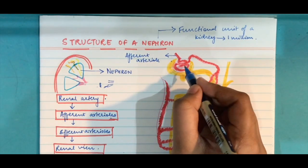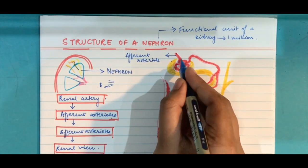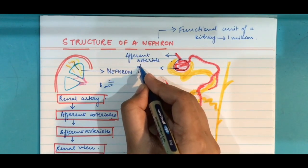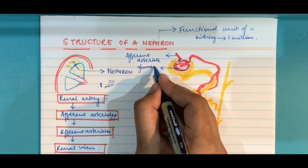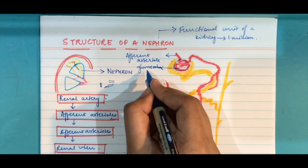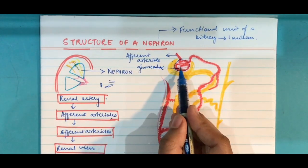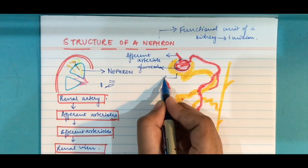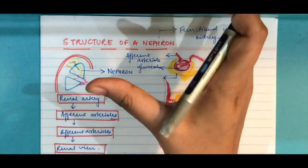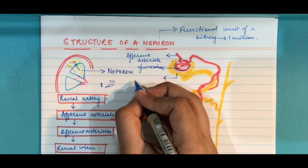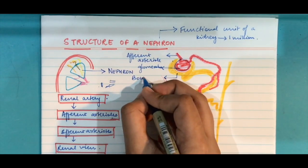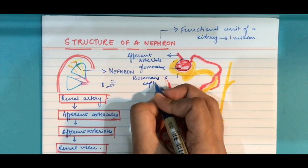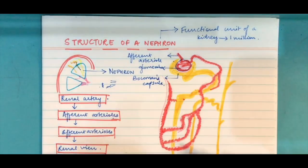Blood from renal artery to afferent arteriole. This afferent arteriole carries the blood through this tuft of capillaries. This structure here is known as glomerulus. You've already learned about this in 10th grade. This structure the yellow one which is surrounding the glomerulus is known as the Bowman's capsule.